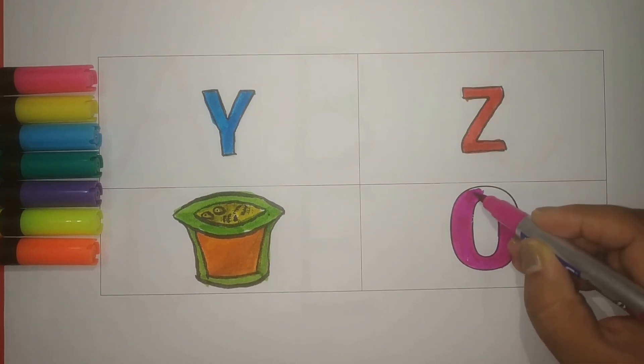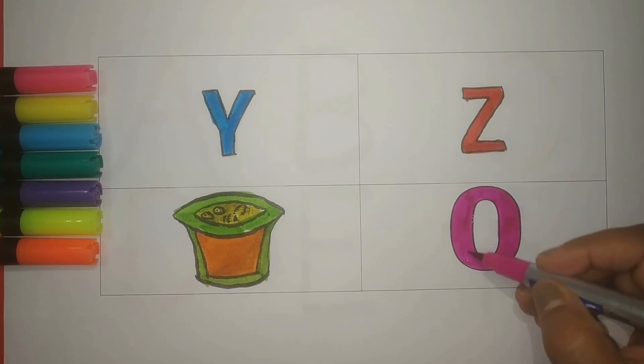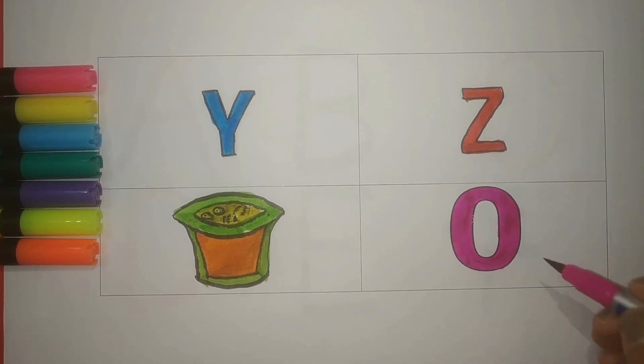There's a special thing about zero. If you put it in front of a number, there's no change. But if you put it after the number, then it increases the value of the number. Pink color. Zero.